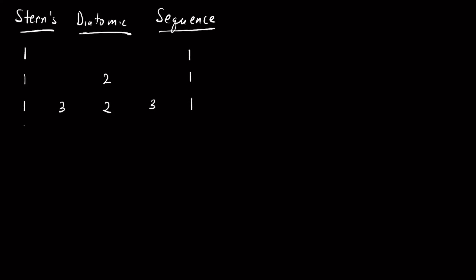Then drop down the 1, 3, 2, 3, 1, and put the sum of each two adjacent numbers in between: 1 plus 3 is 4, 3 plus 2 is 5, 2 plus 3 is 5, 3 plus 1 is 4. And I'm just going to keep going forever.